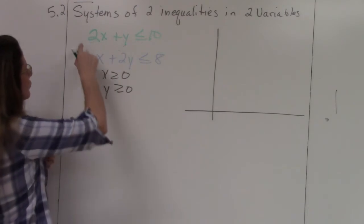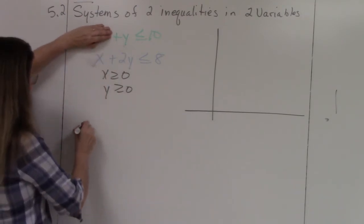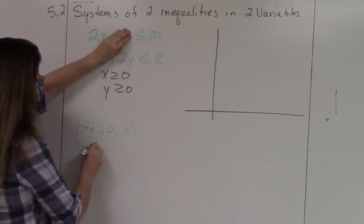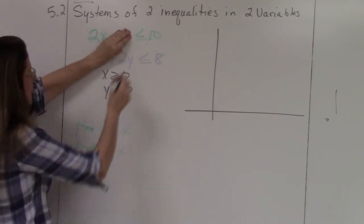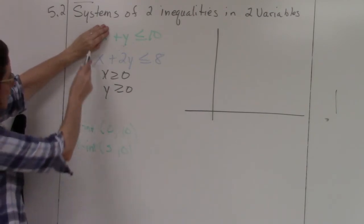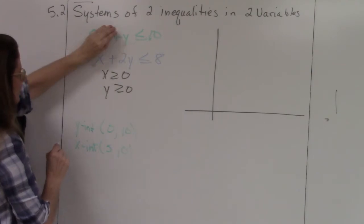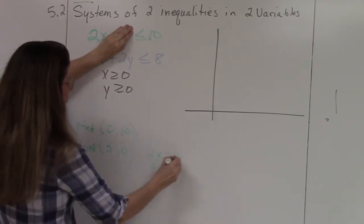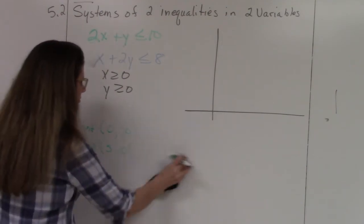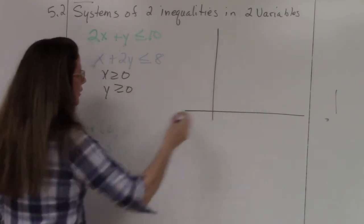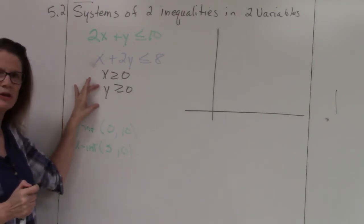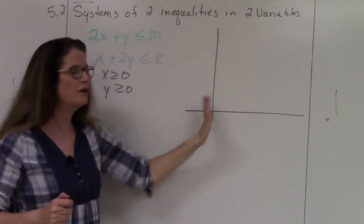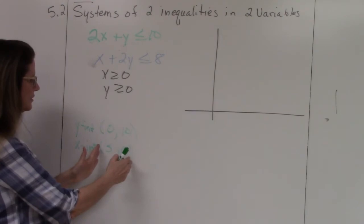I'll start with my green inequality: 2x + y ≤ 10. Working only with the green line — the y-intercept is when x is 0, so y equals 10. The x-intercept is when y is 0: 2x = 10, so x = 5. Notice I'm only working in the first quadrant, indicated by x ≥ 0 and y ≥ 0.